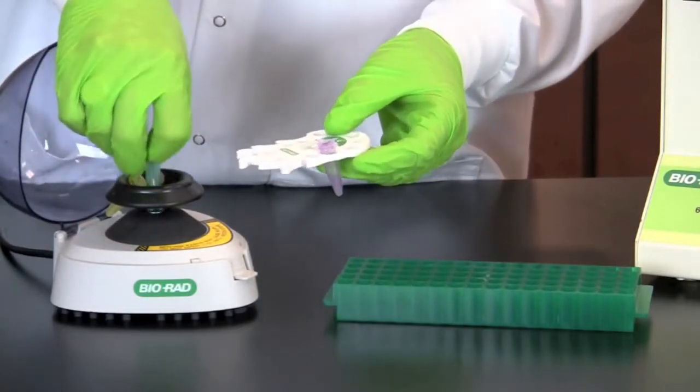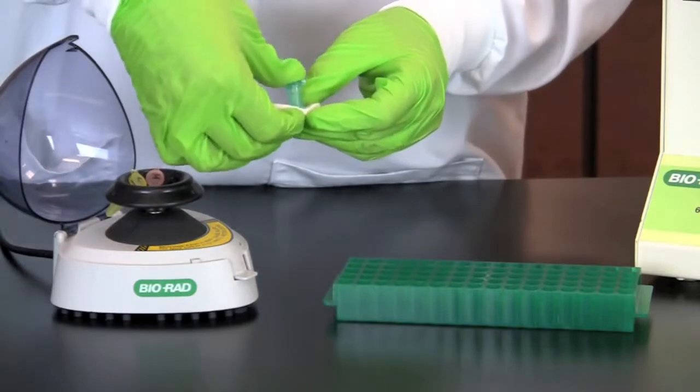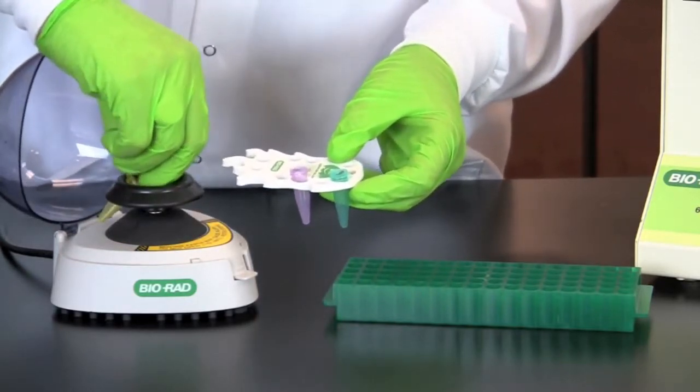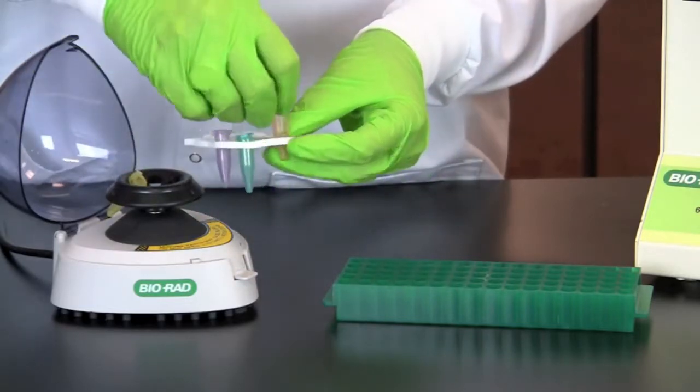After spinning the tubes, place the tubes in a rack and incubate for 30 minutes in an incubator or water bath at 37 degrees Celsius, or overnight at room temperature.